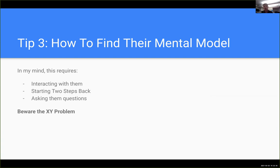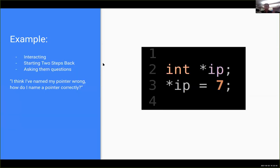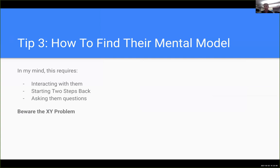I'd also generally say you need to start two steps back — don't just answer their direct question. Start a little backwards and pull up an example. The short answer to 'how do I name a pointer correctly' might be to show the correct code, but that's not really what we want. We want to dig back and ask why they asked it that way. The reason I focus on this is because of something called the XY problem.